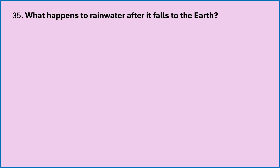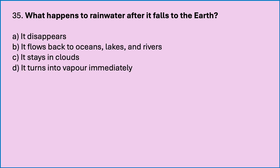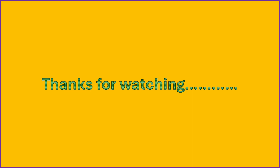What happens to rainwater after it falls to the earth? Options are: it disappears; it flows back to oceans, lakes and rivers; it stays in clouds; it turns into vapour immediately. Which is the correct answer? It flows back to oceans, lakes and rivers. If you like this video, please like, share and subscribe. We will see in the next video. Thank you.